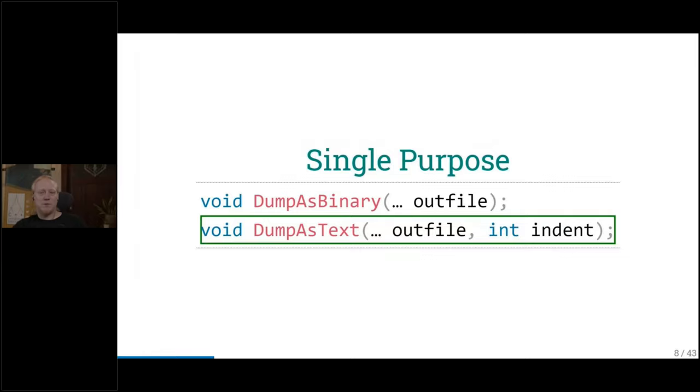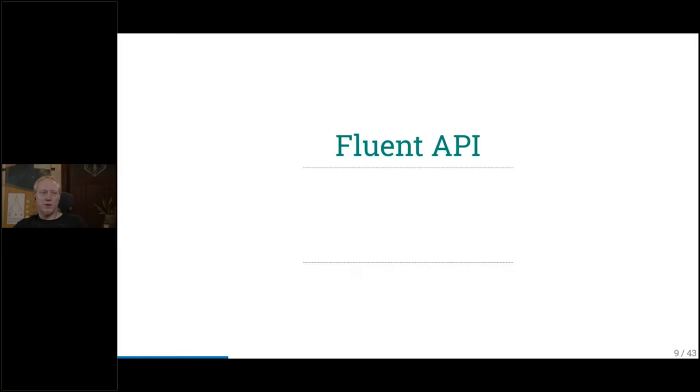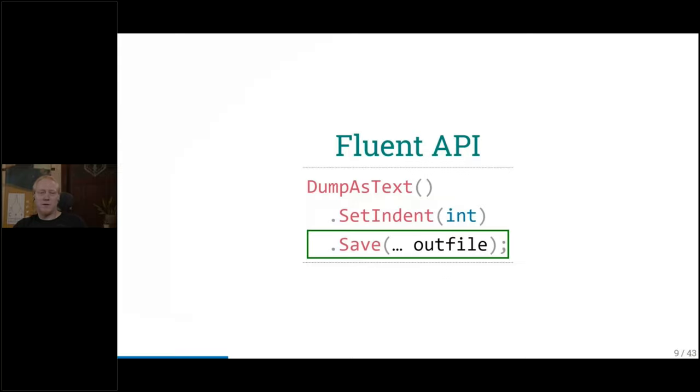We still have more options before we come to types. How about a Fluent API? For example, we start with dump as text and then set an indentation and finally save it to our output file. Fluent APIs are a bit cumbersome to develop. They show that you care about the API and want to do something well. As I've shown, there are many possibilities. But then we have the types as well.